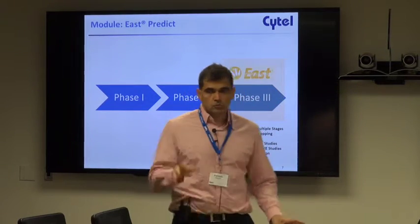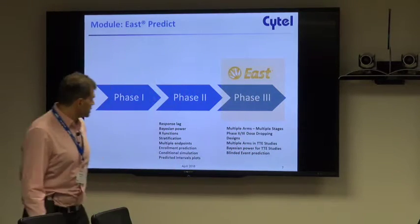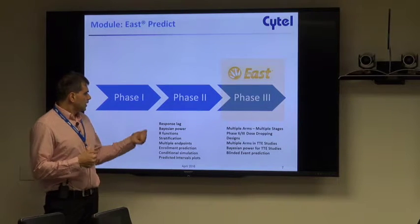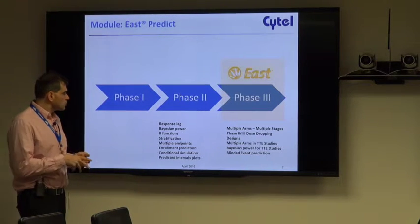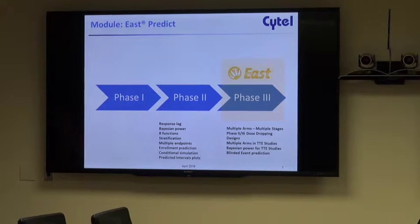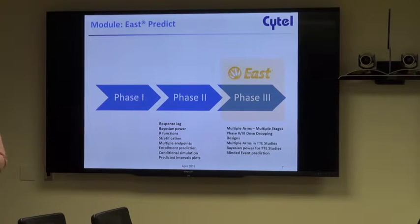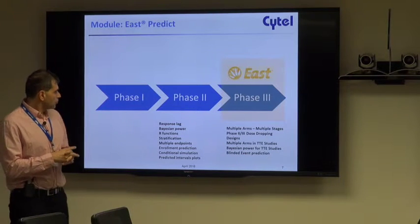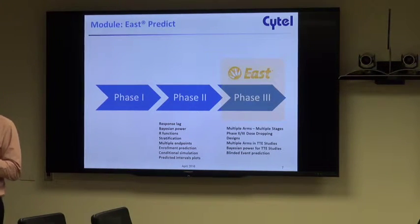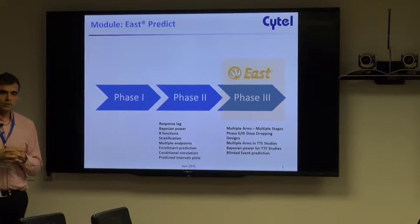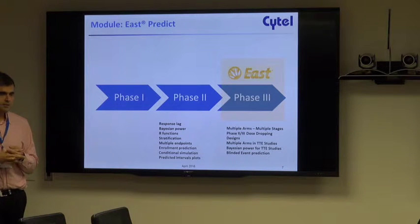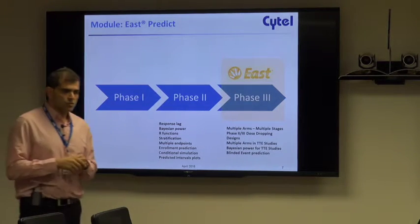These are the new features for version 6.4, which supplement features from the previous version. Those earlier features included dealing with delayed response, calculating Bayesian power for normal and binomial endpoints, integrating functionality from R for things EAST cannot do natively — such as sampling during simulations from different distributions or using different test statistics. Through the power of simulation we can also explore stratification factors in designs and assess their impact on power. For multiplicity, in addition to multiple arms, we deal with multiple endpoints and have different parallel and serial gatekeeping procedures, plus the prediction capabilities mentioned earlier.